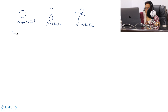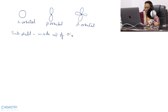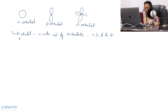Subshells are made up of orbitals. Subshells are also represented by S, P, D and F. The maximum number of electrons in S, P, D and F subshells are 2, 6, 10 and 14 respectively.